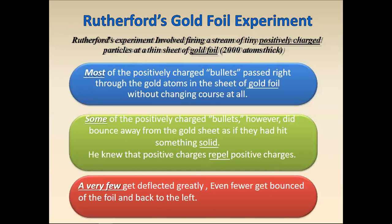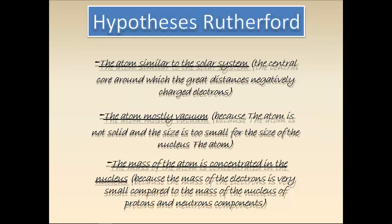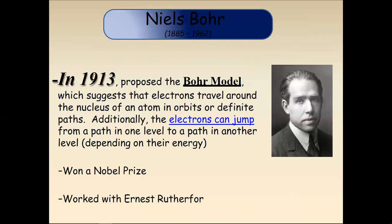From this experiment: most positively charged bullets passed right through the gold foil without changing course at all; some bounced away from the gold sheet as if they had hit something solid; and very few were deflected greatly or bounced back. Rutherford's hypothesis — analogous to the solar system — states that the atom is mostly vacuum and most of the atom's mass is concentrated in the nucleus.